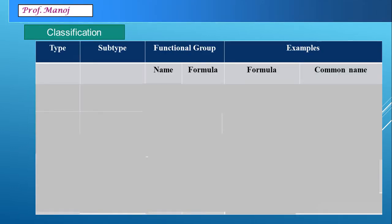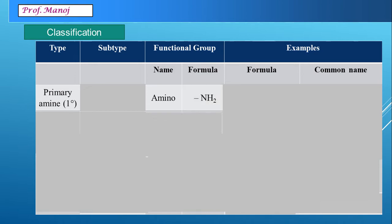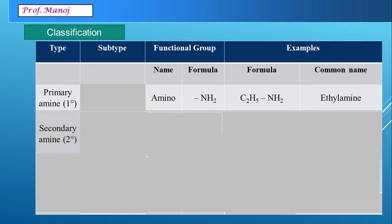Let us now learn about the classification of amines. The first type is known as primary amine, denoted by one degree. This group is known by the name amino group and it is denoted with the symbol –NH2. An example of it is C2H5NH2, called ethyl amine.